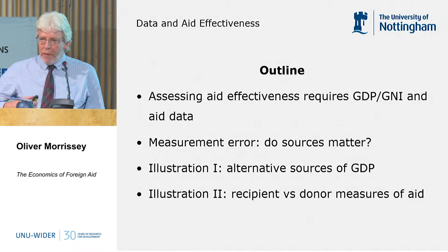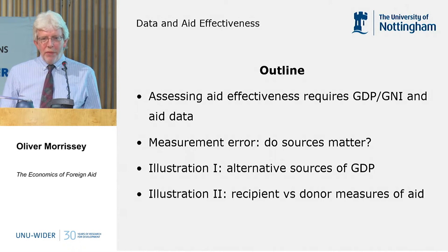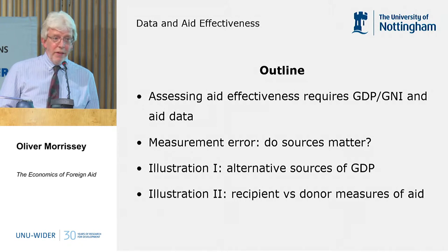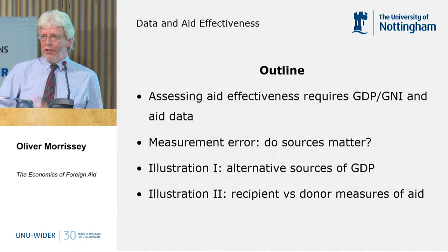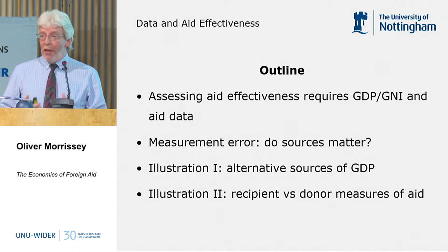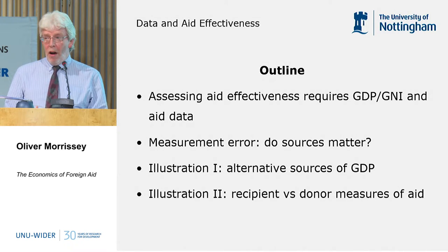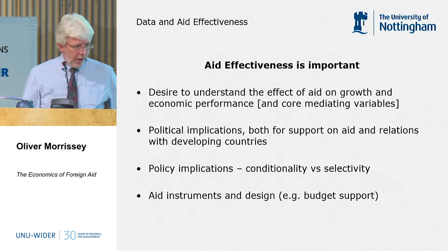Secondly, going on to the aid side, there are particular concerns about measuring aid. Especially because most of the data we have — and all of the data used for cross-country analysis — is the donor data: what the donors say they've allocated or dispersed. There's a difference between what they say they've committed and what they disperse, but that's not the same as what recipient countries receive. One of the main limitations in current data is that we have very poor data on what the recipients receive.